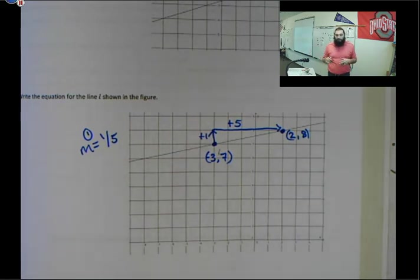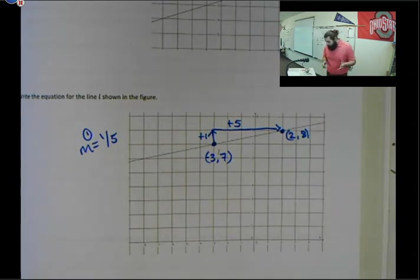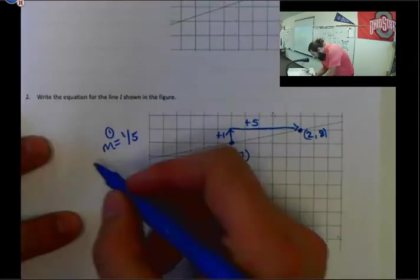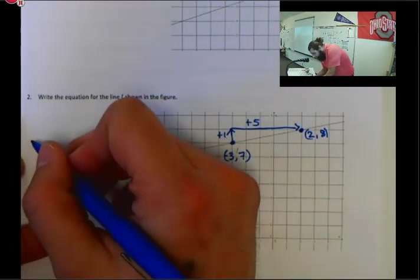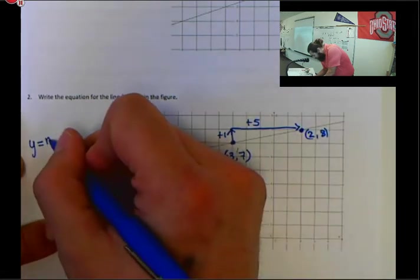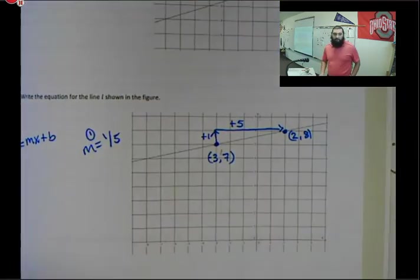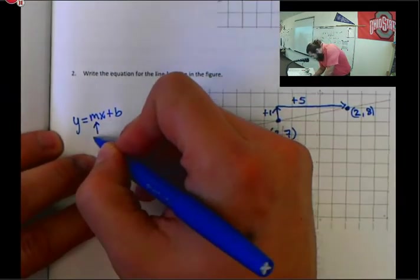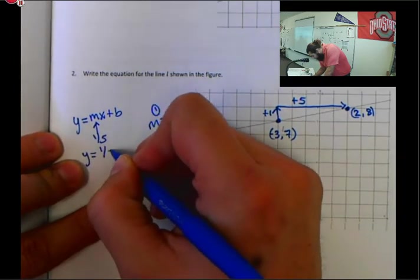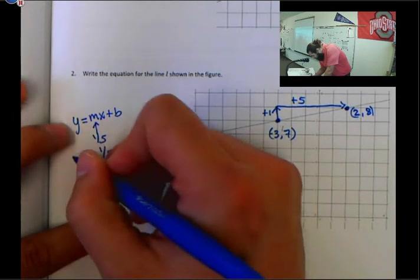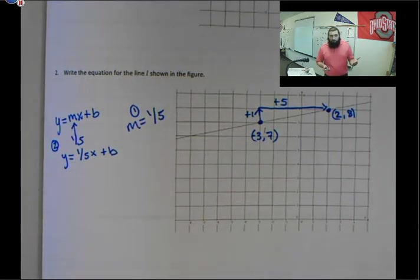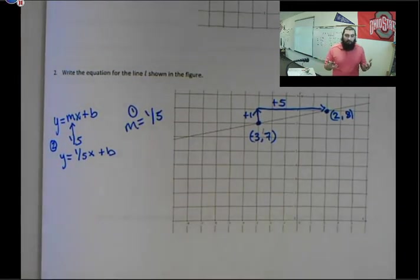We've done this lots of different times — there are lots of different examples and videos for you to practice finding your slope. Find your slope, go from point to point. Step two is to take your slope and plug it into your equation. Your equation is y = mx + b — the basis of any linear equation in slope-intercept form. We're going to take one-fifth and plug it in for m, so our equation looks like: y = (1/5)x + b. This is step two.